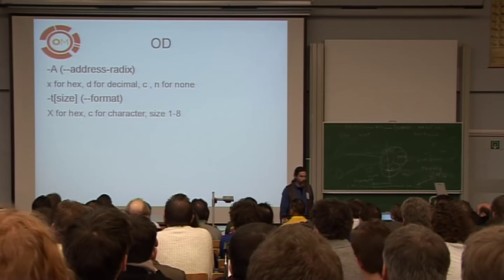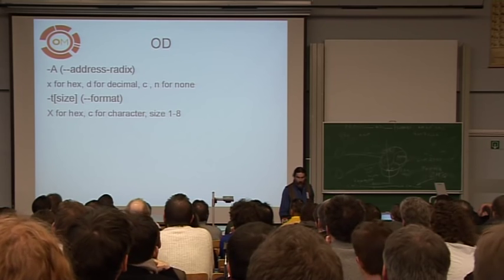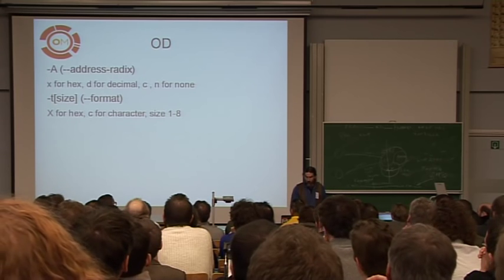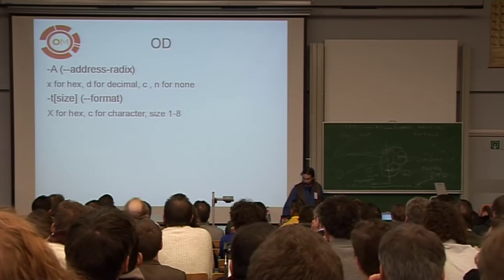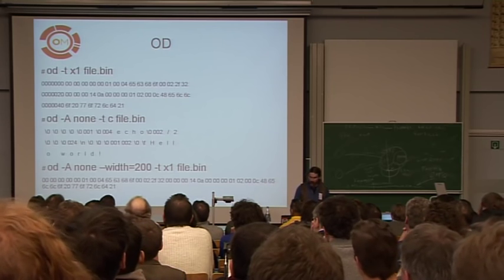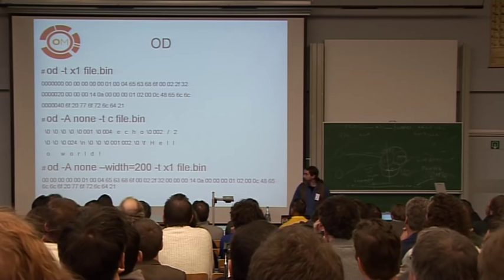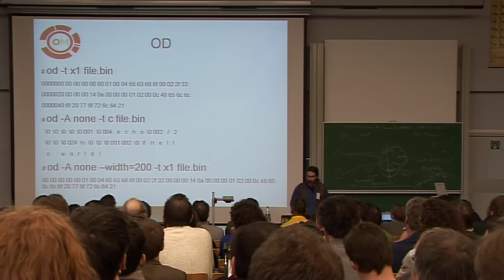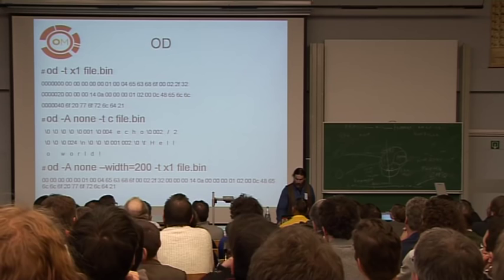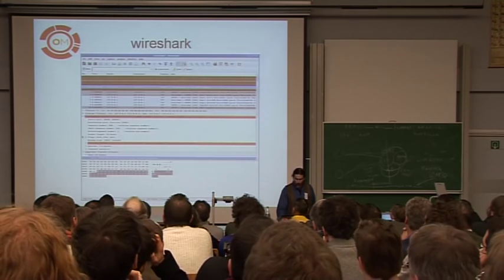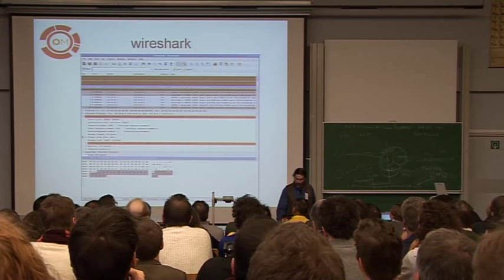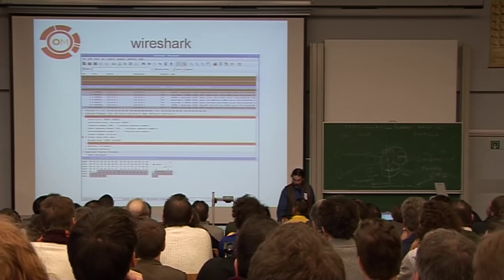OD has got a bunch of different options — dash-A for the address; I actually pass 'none' all the time to get rid of addressing because half the time I don't care. You can change a bunch of different size things and the widths. OD is kind of still useful but I probably don't use it as much as the other tools. My main use of OD is actually for doing test cases — I can take that last line and cut and paste it into a test case. And of course Wireshark, if you really like the GUI world — I'm kind of a command line guy, but Wireshark is actually a pretty nice little tool.